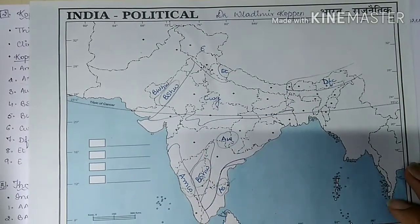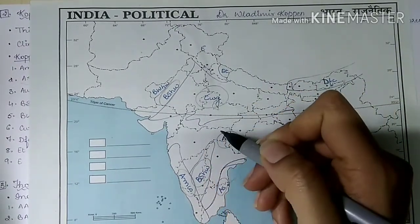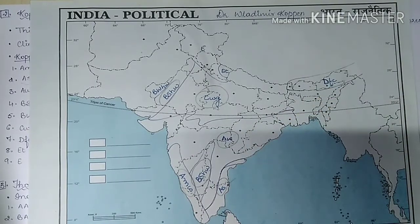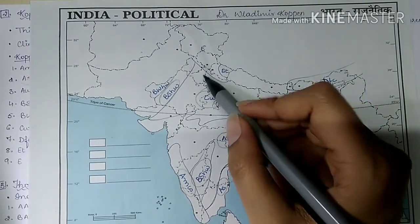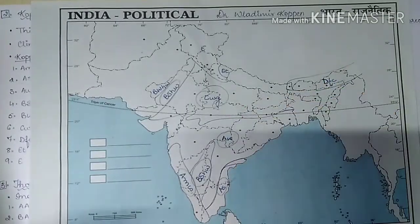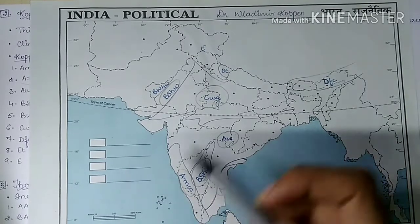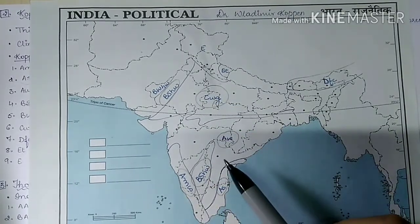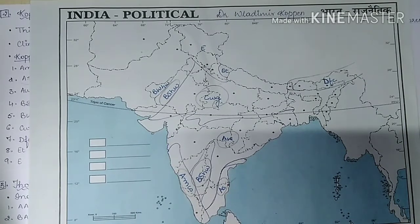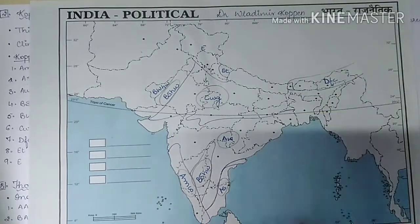CWG — monsoon type with dry winters — is found in most of the Gangetic plain, along with eastern Rajasthan, Assam, and the Malwa plateau. Most rainfall occurs in summer; winters are dry. The temperature rises up to 40 degrees Celsius in summer, whereas in winter it falls to around 27 degrees Celsius.